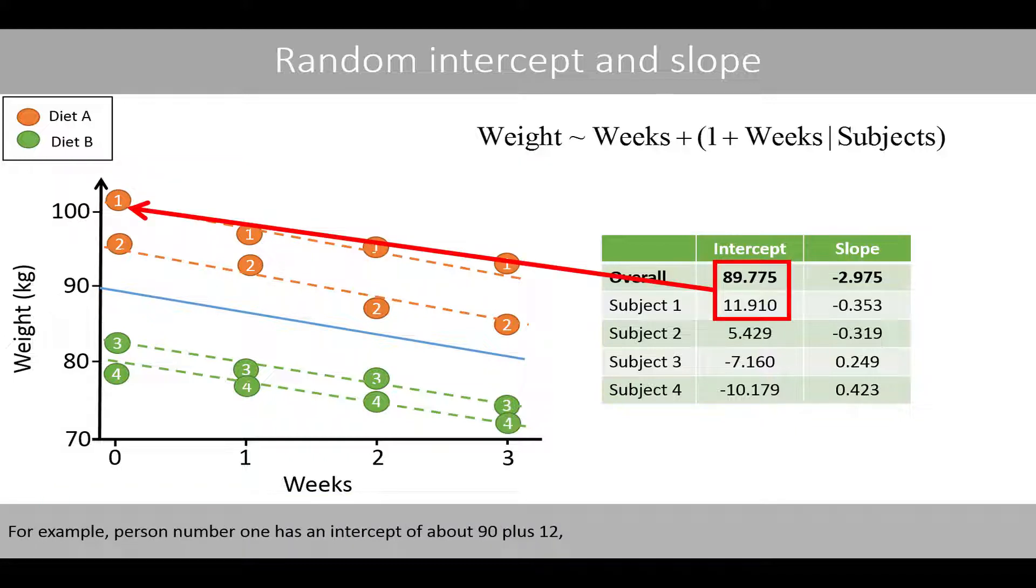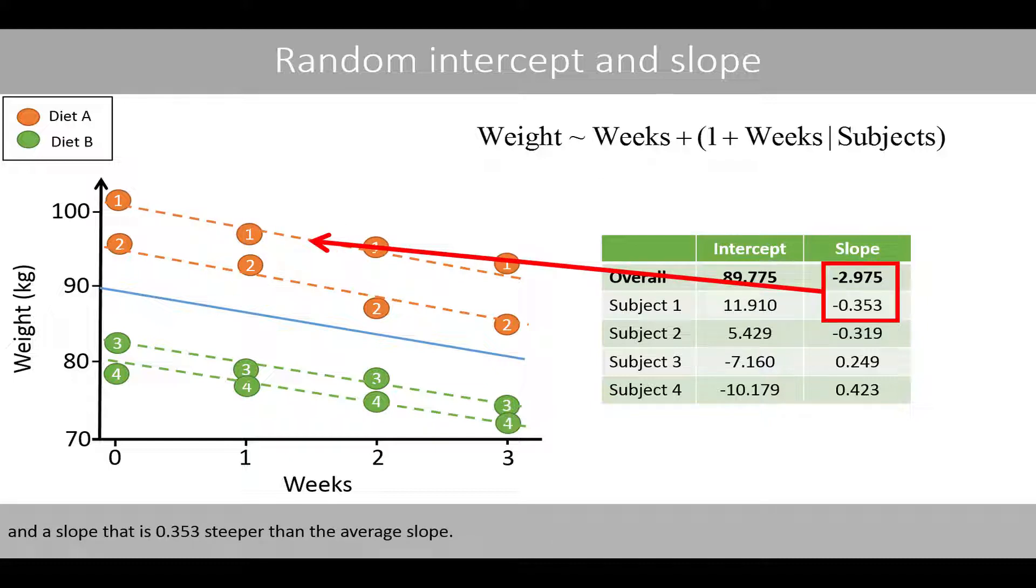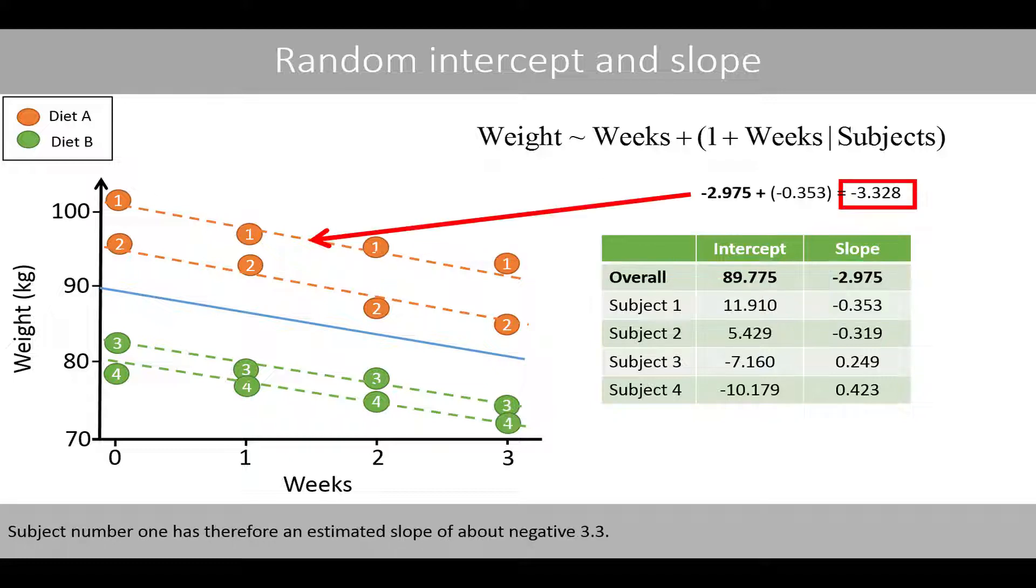For example, person number 1 has an intercept of about 90 plus 12, and a slope that is 0.353 steeper than the average slope. Subject number 1 has therefore an estimated slope of about negative 3.3.